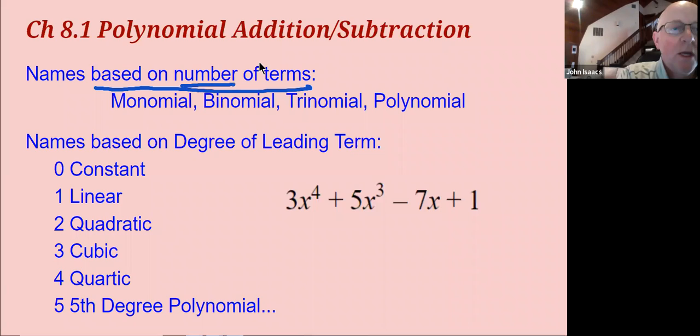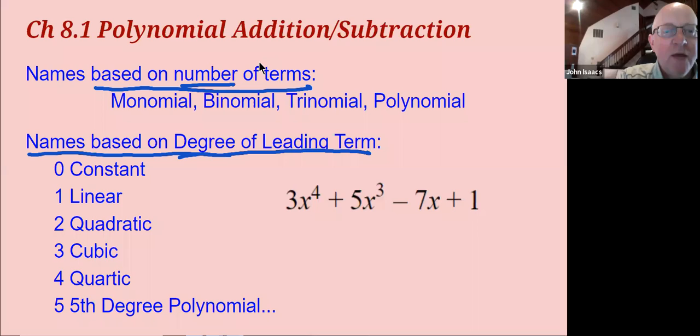We're going to be naming based on the number of terms, and we're going to be doing based on the degree of the leading term. So every polynomial is going to have two parts to its name.